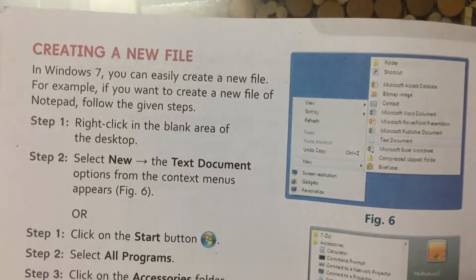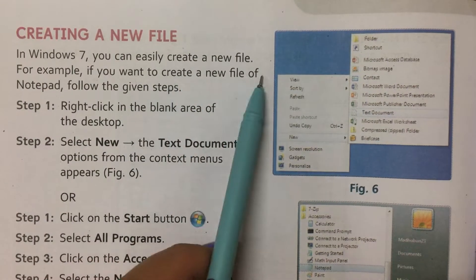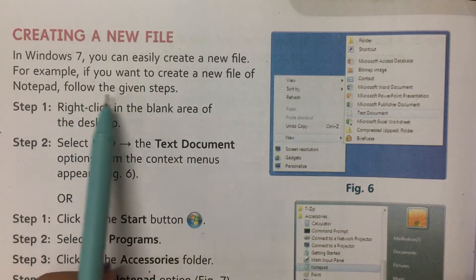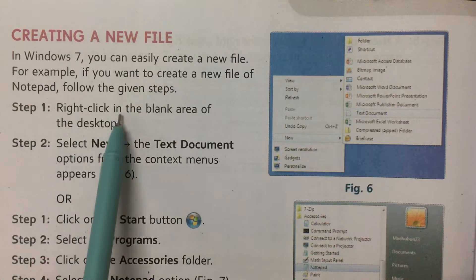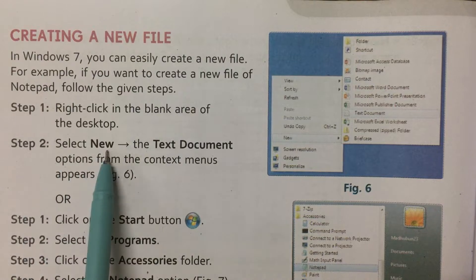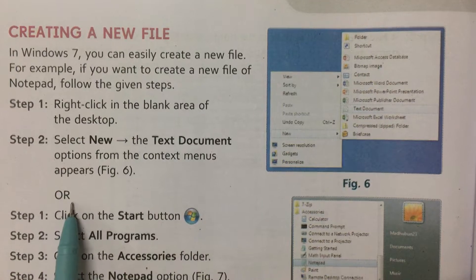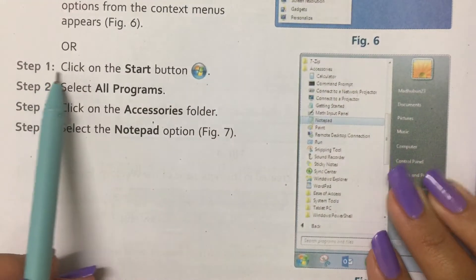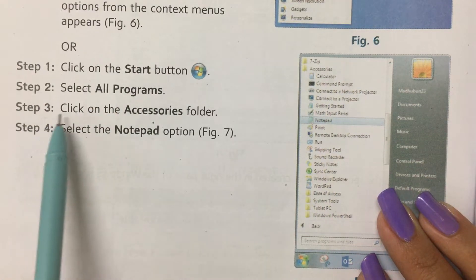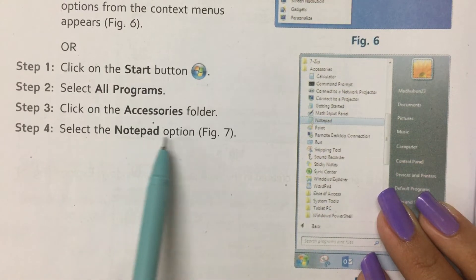Now creating a new file. In Windows 7, you can easily create a new file. For example, if you want to create a new Notepad file, follow the given steps. Step 1: Right click in the blank area of the desktop. Step 2: Select New — the text document option from the context menu appears. Or alternatively: Step 1: Click on the Start button. Step 2: Select All Programs. Step 3: Click on the Accessories folder. Step 4: Select the Notepad option.